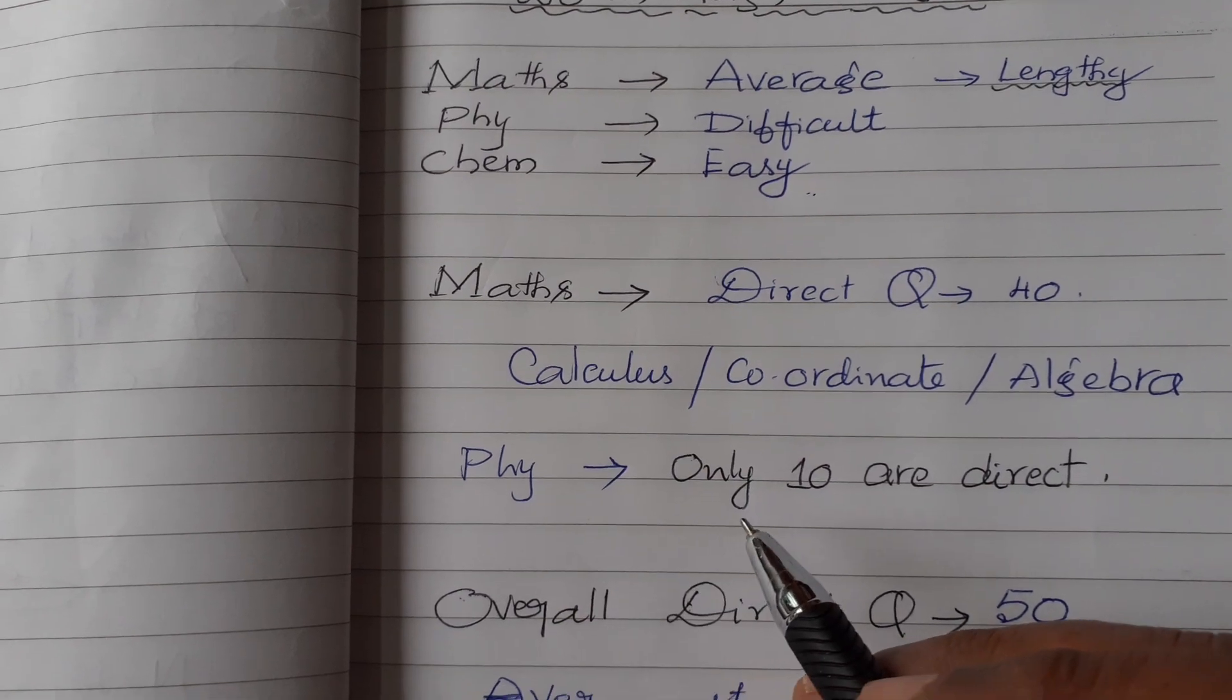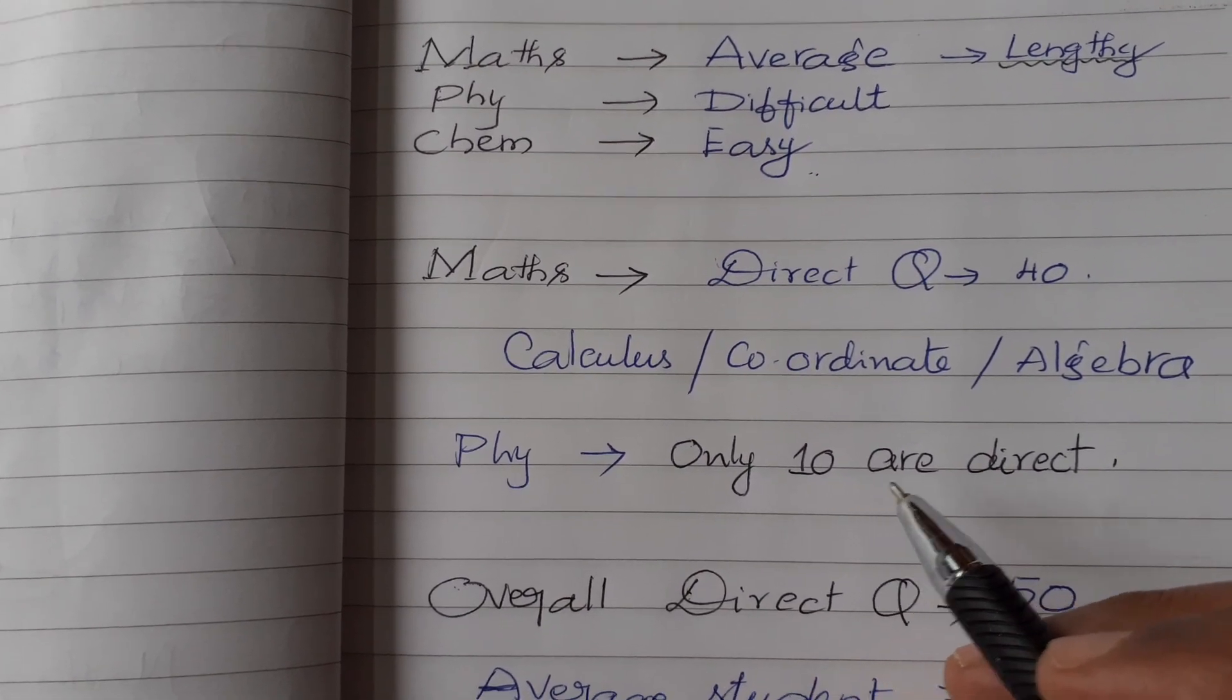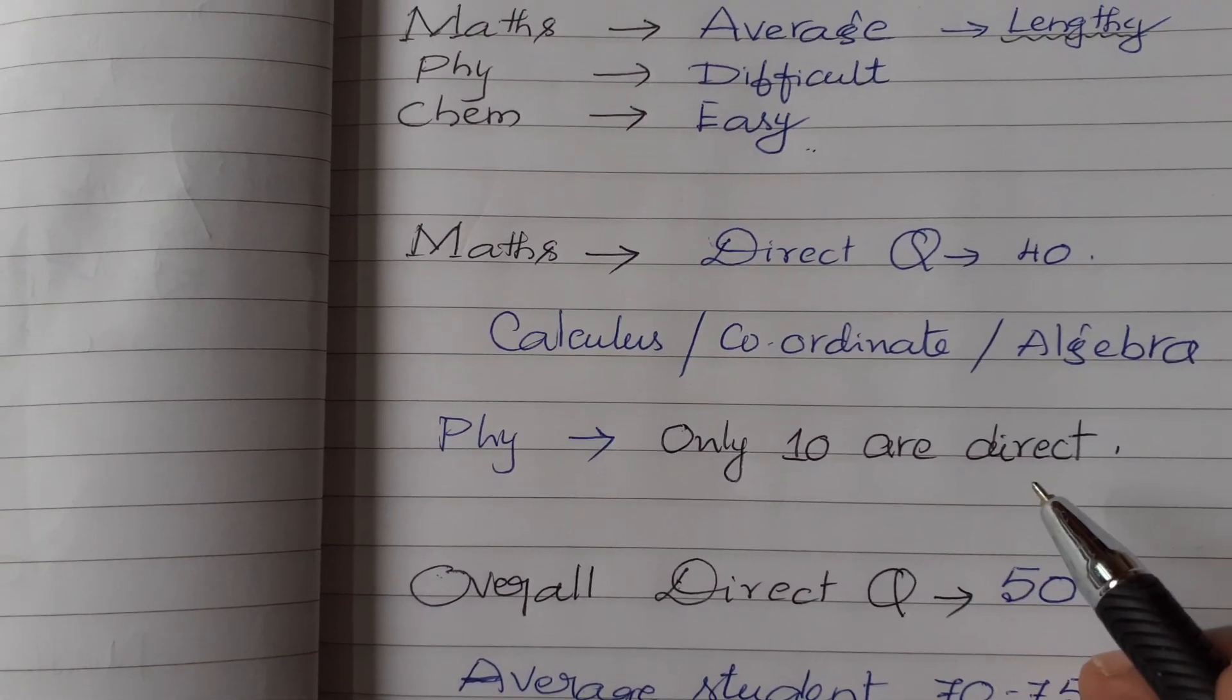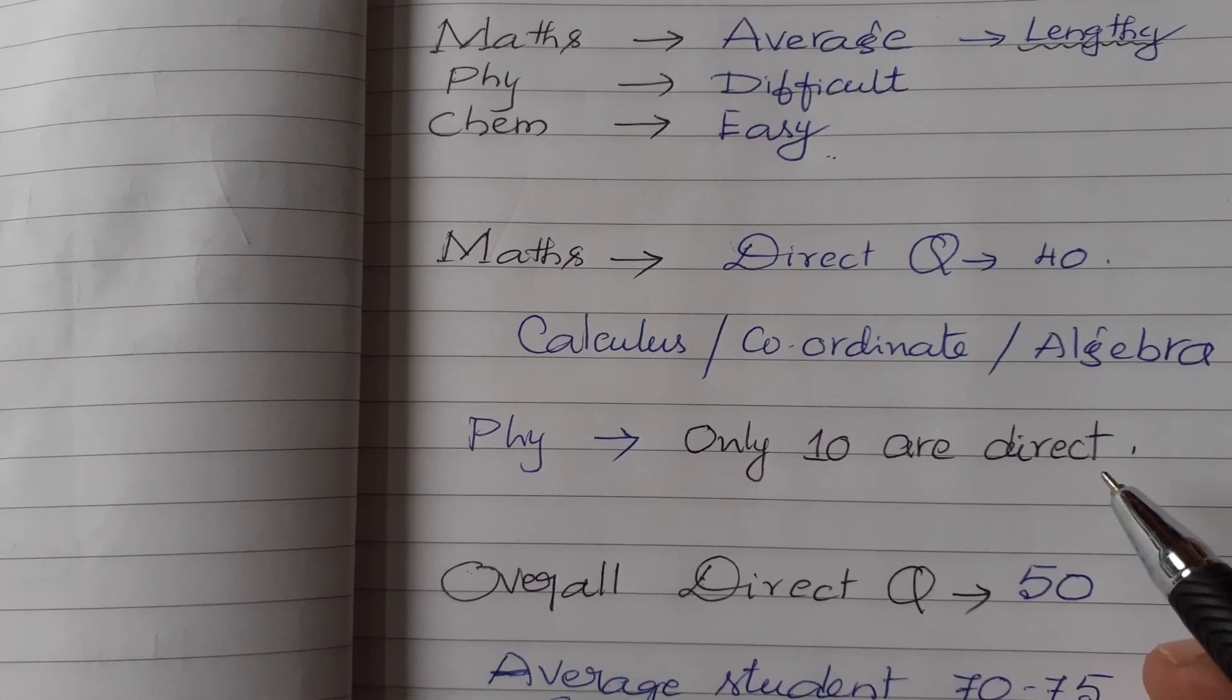And in physics, only 10 out of 80, only 10 questions are direct. So physics is difficult.